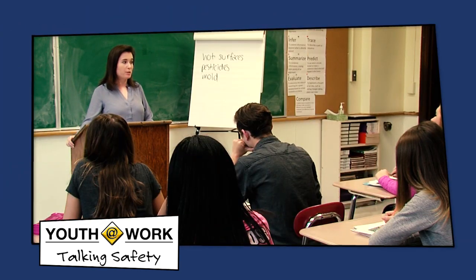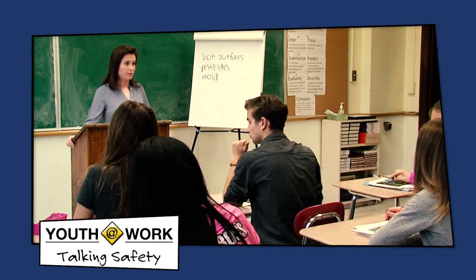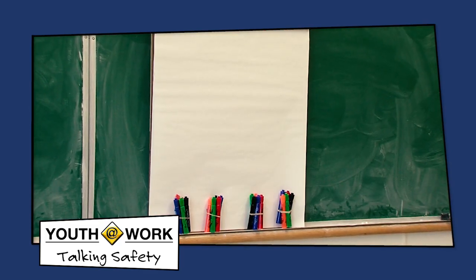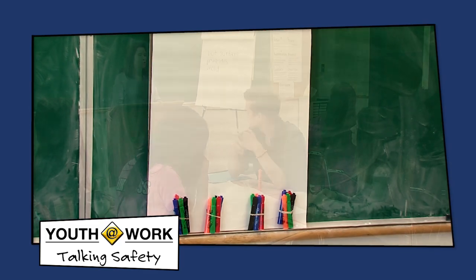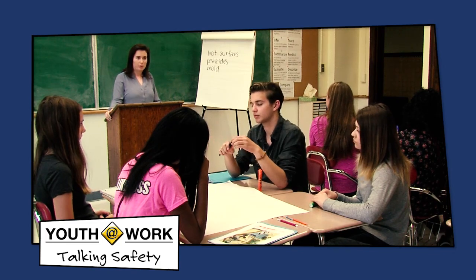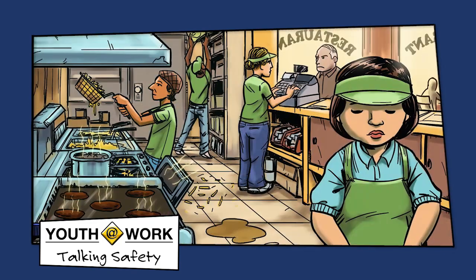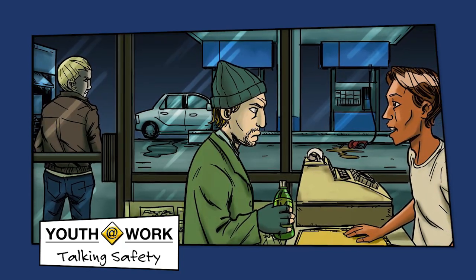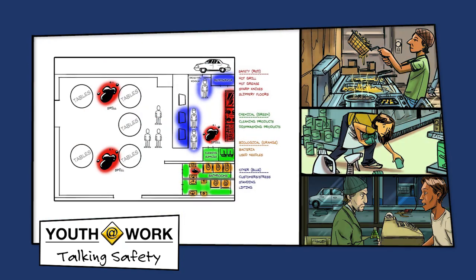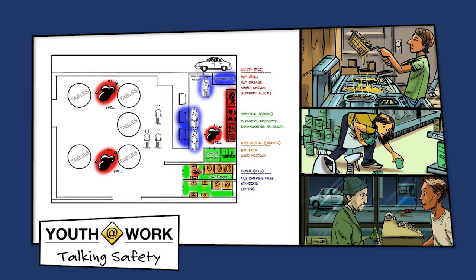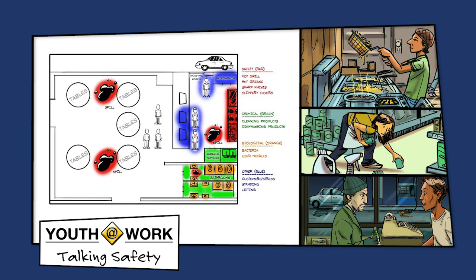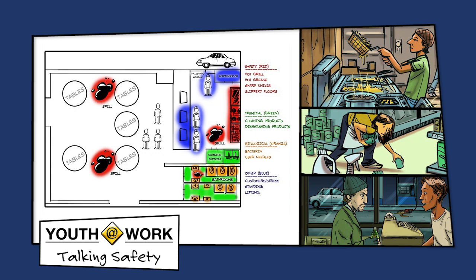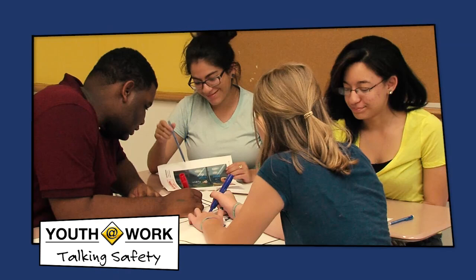Next, divide the students into groups of 3 or 4. Pass out a sheet of flip chart paper and a set of colored markers to each group. Give each group a specific type of workplace, like a fast food restaurant, grocery store, or gas station, and instruct them to draw a floor plan for the workplace. The floor plan should show all the rooms, work areas, furniture, equipment, work processes, doors, and windows.